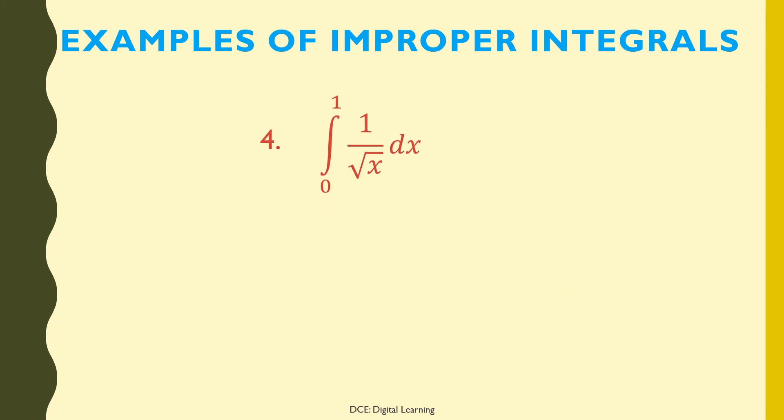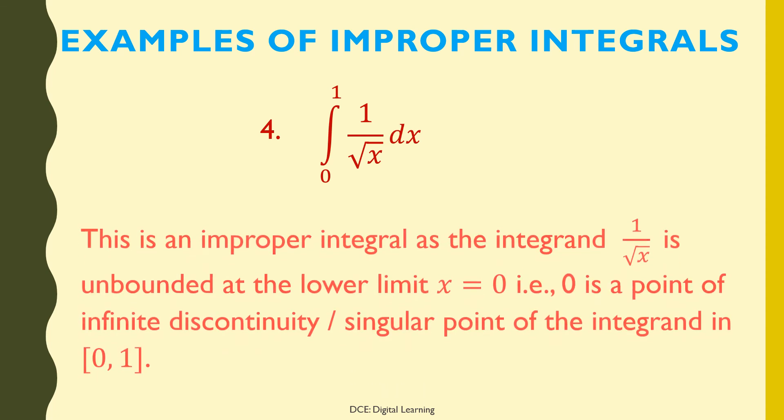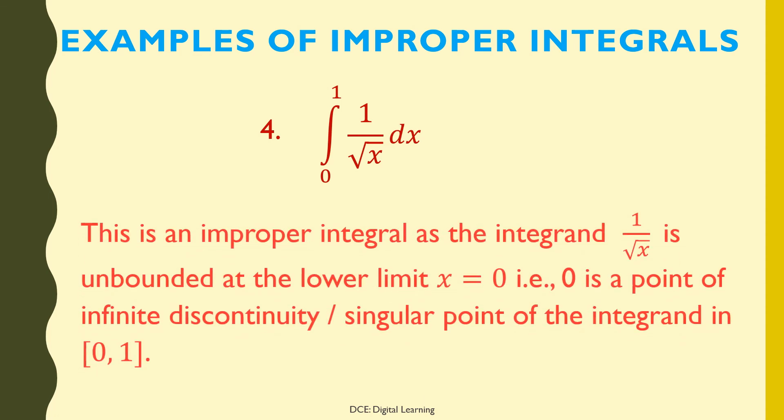Fourth example: ∫(1/√x)dx from 0 to 1 is an improper integral, as the integrand 1/√x is unbounded at the lower limit x = 0 — that is, 0 is a point of infinite discontinuity or singular point of the integrand in the closed interval [0, 1].